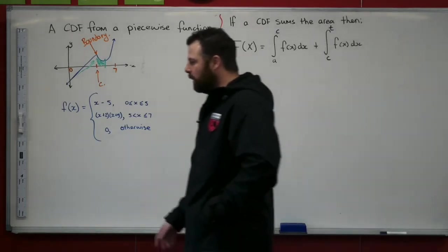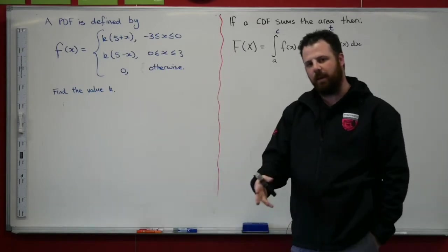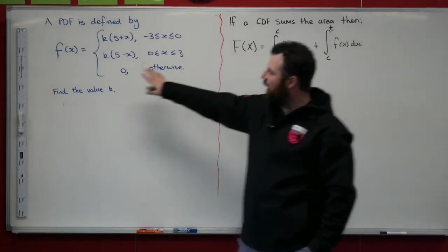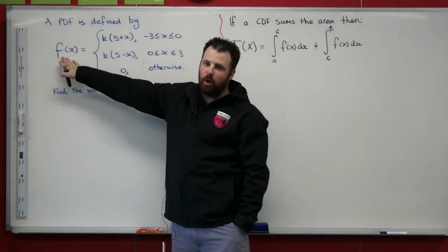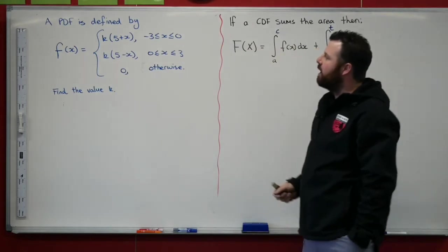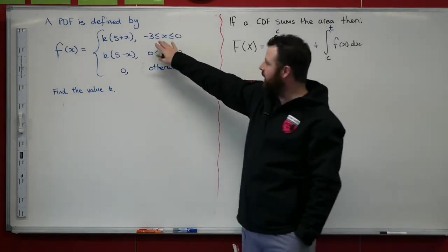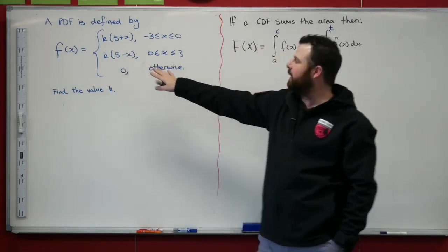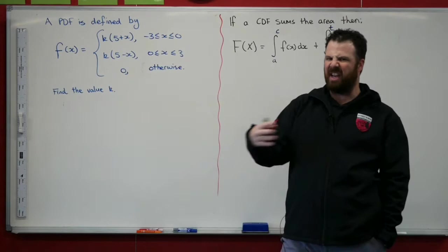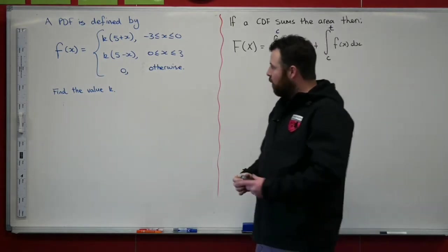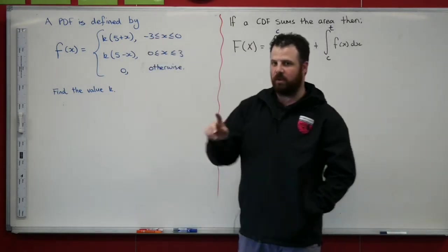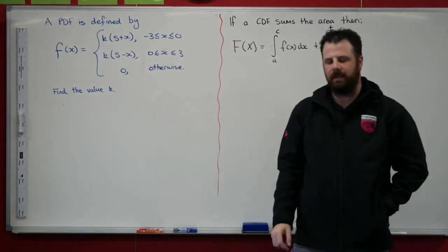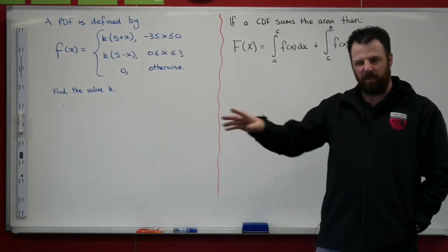So worked example 11. A probability density function is defined by, notice the notation, lower f of x, k(5 + x) for values of x between minus 3 and 0, k(5 - x) for values between 0 and 3, and 0 elsewhere. One thing that we notice, we have two different functions that describe two different parts of this overall probability density function.